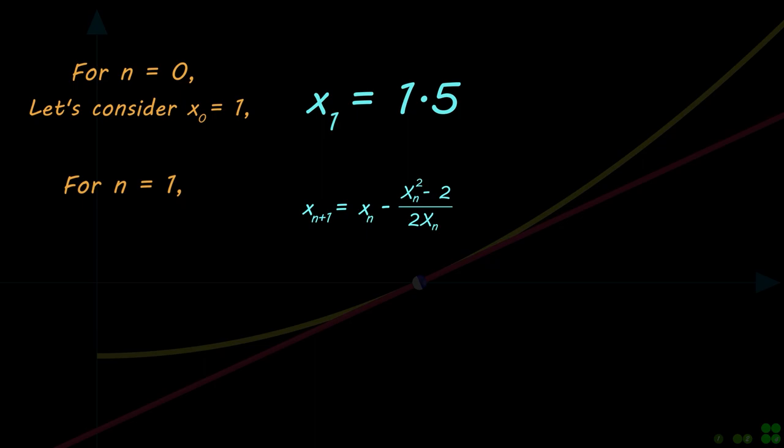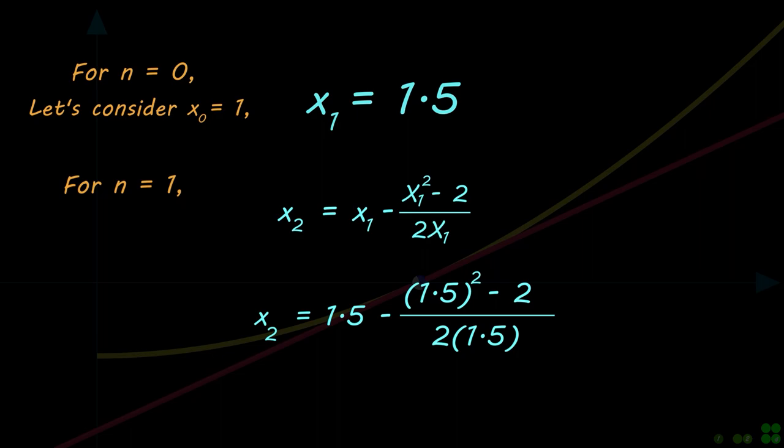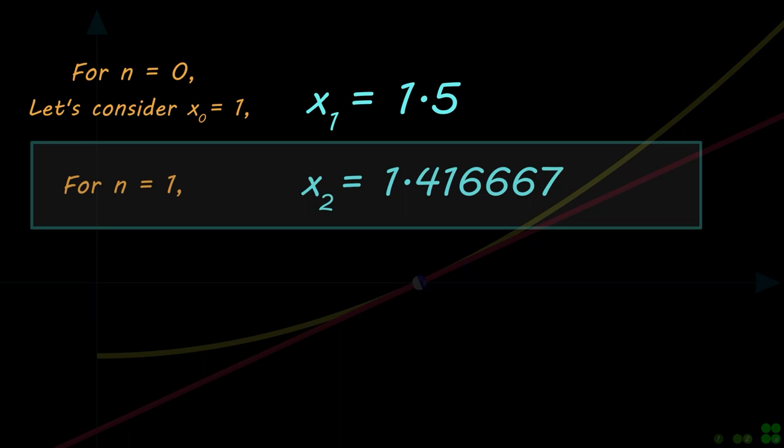Now for n equals 1, a repetition of the same process will give us a value for x2 as shown. Now let's do one more step and find the value for x3.